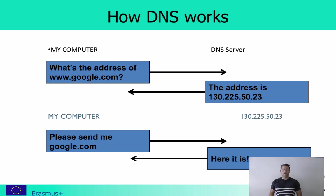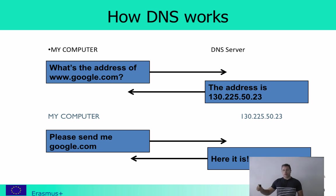It works the following way: when you, in your computer, write google.com, what you do first of all is that you send a request to a DNS server asking what is the IP address of google.com. And you get a reply back in terms of an IP address — in this case 130.225.50.23. And then based on that reply, you can send an HTTP request to google.com sent to that IP address, and you get the reply back with the webpage that you want to see.